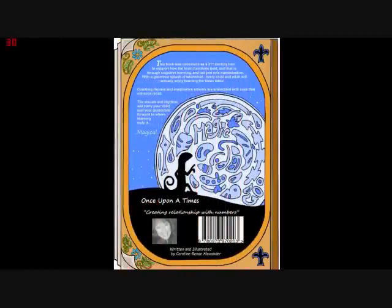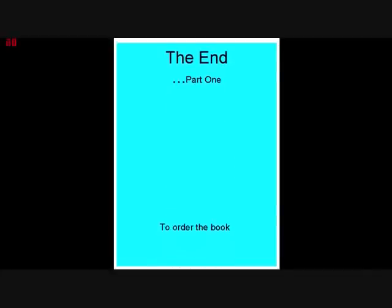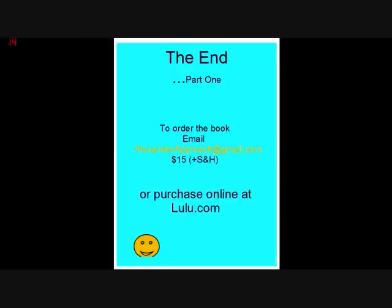Once Upon a Times, written and illustrated by Caroline Renate — creating a relationship with numbers. This is the end of Part 1. Stay tuned for Part 2 and Part 3. You can order the book at alexanapproach@gmail.com, or purchase it online at lulu.com. Thank you — we'll see you next time!